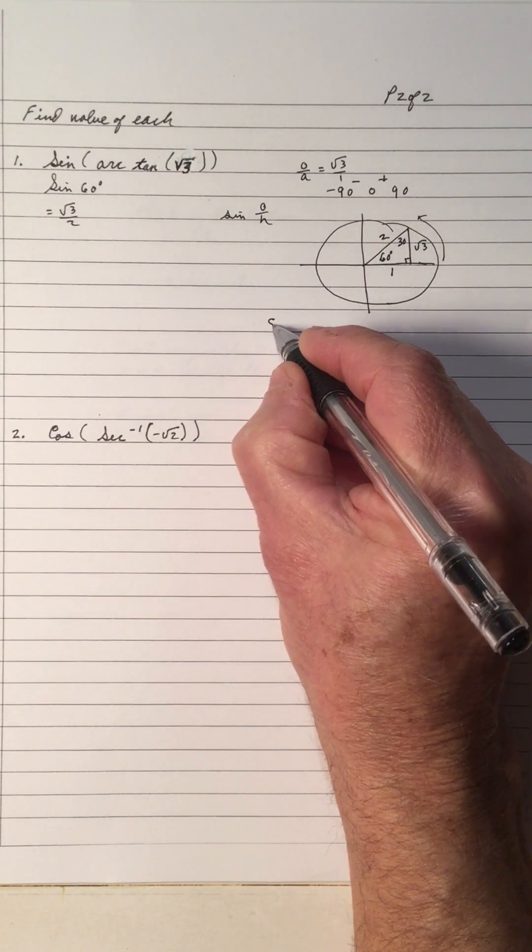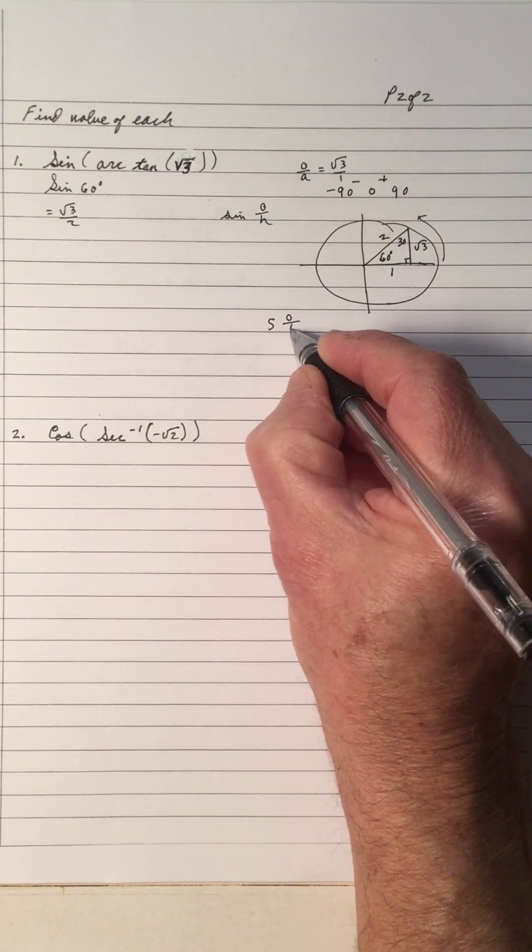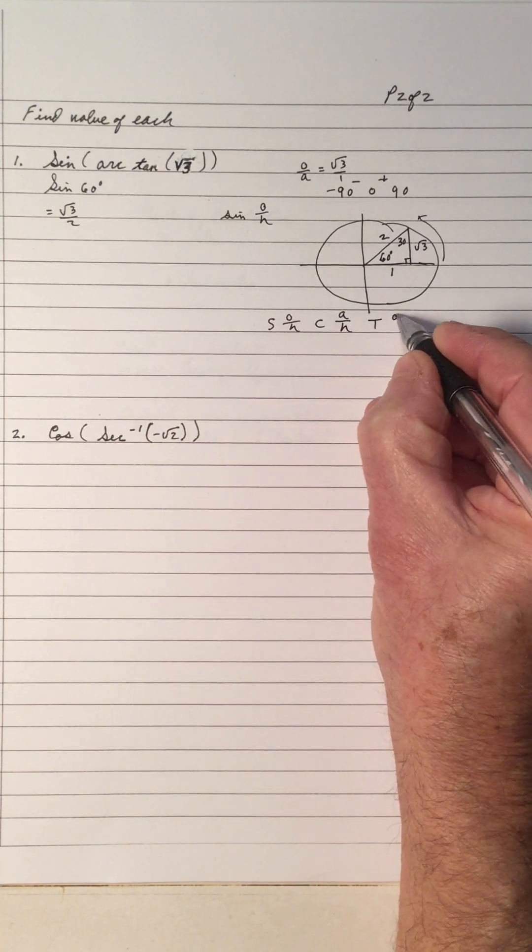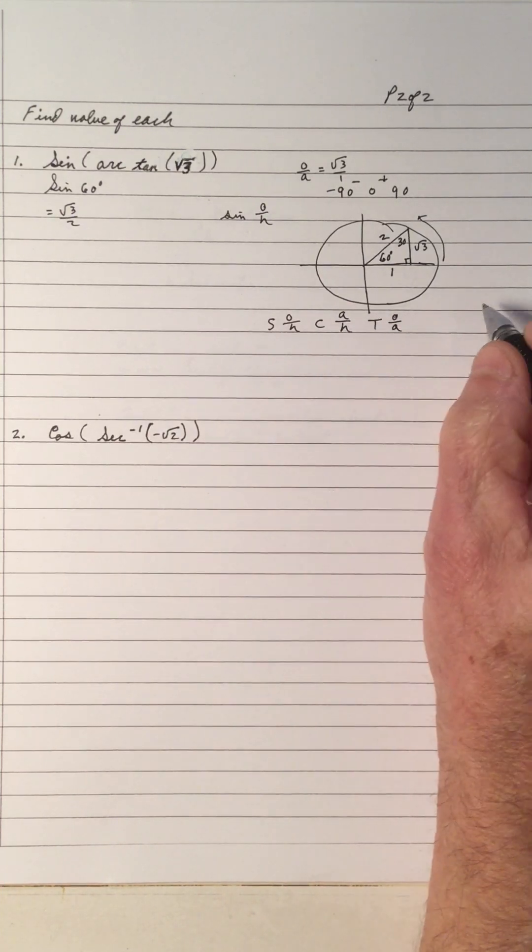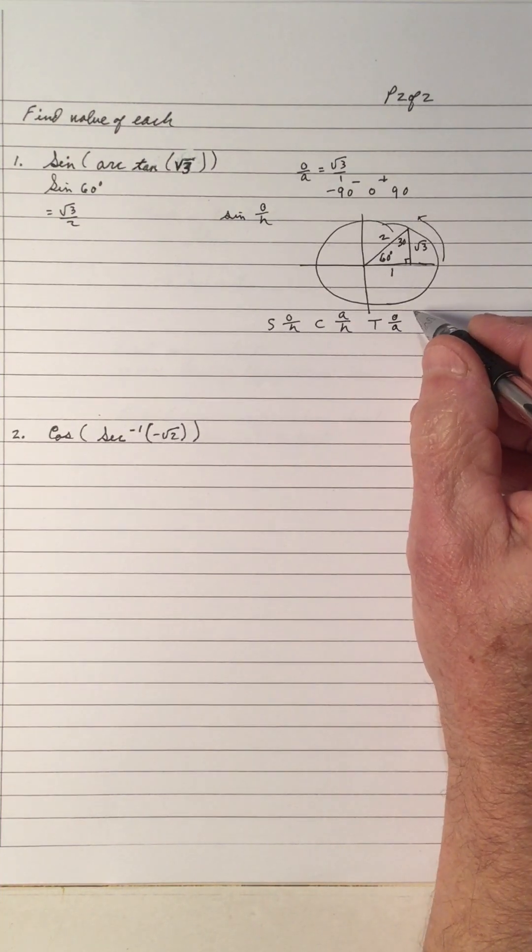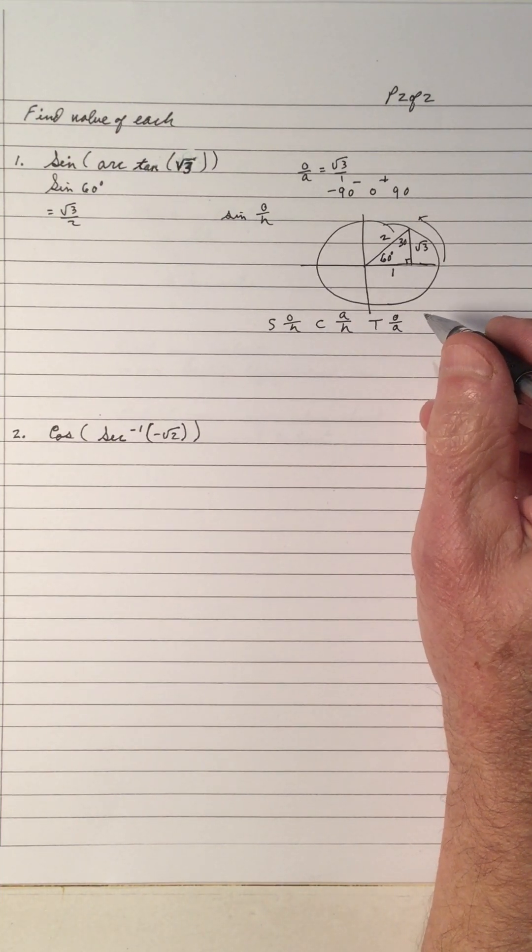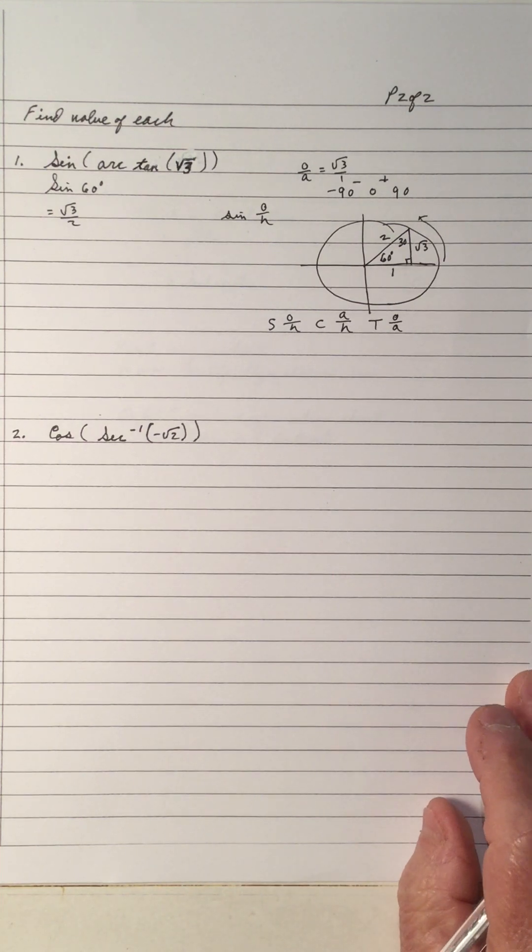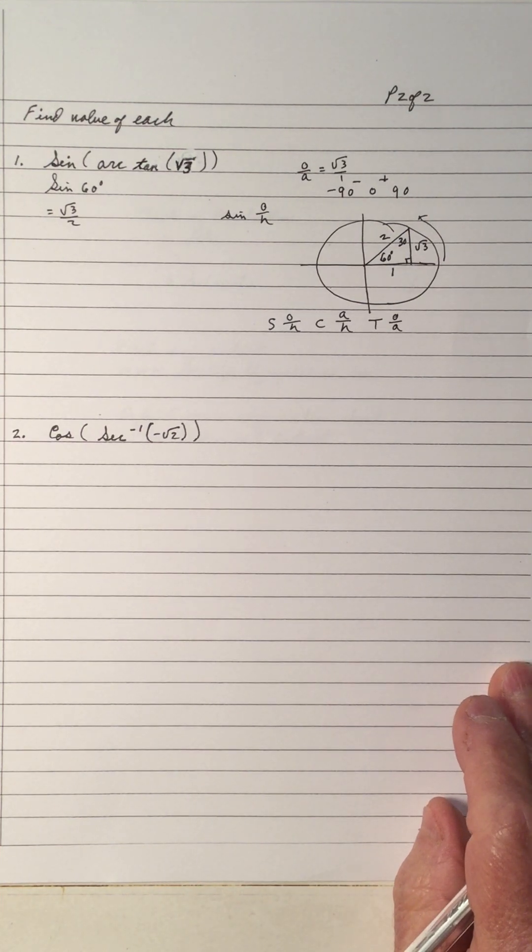SOHCAHTOA: sine is opposite over hypotenuse, cos is adjacent over hypotenuse, tan is opposite over adjacent and the reciprocals. Just keep that in mind. And that's all done in the first unit in trig in algebra 2.